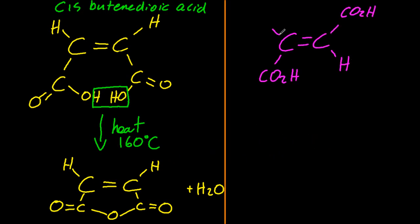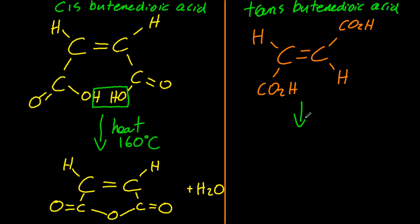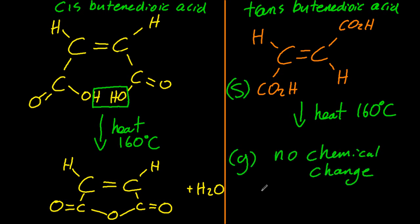Now the trans one, when you heat it, doesn't undergo a chemical reaction. So the trans-butene-dioic acid just turns from a solid to a gas when you heat it. That's a little strange. Normally solids turn to liquid, turn to gas. So if it goes from solid straight to gas, that's known as sublimation.